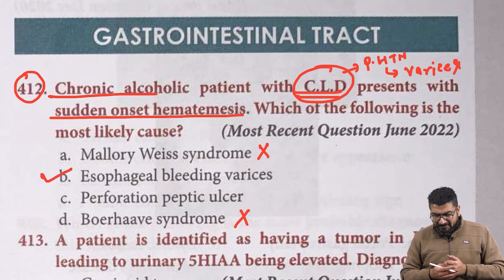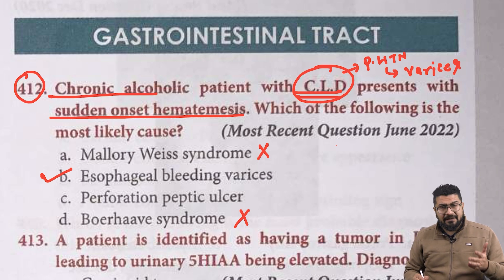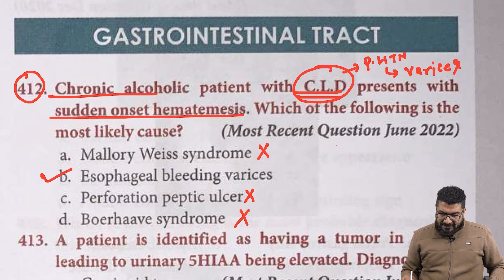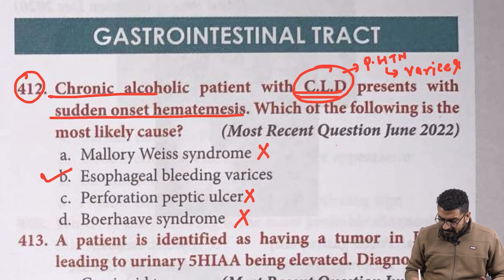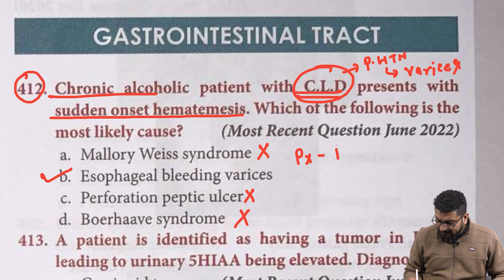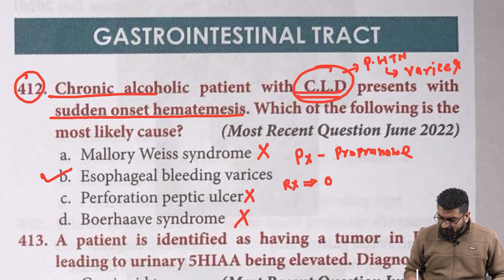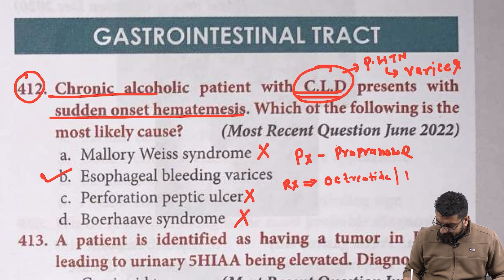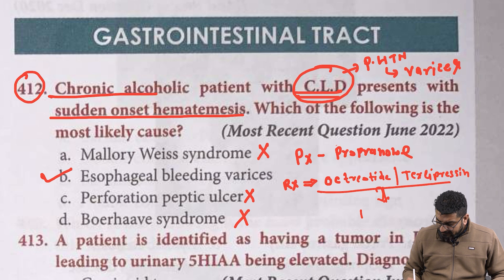The answer is esophageal bleeding varices. Peptic ulcer perforation rarely presents with hematemesis, and the patient may not have a CLD history. For prophylaxis of variceal bleed we give propranolol. To treat variceal bleed we give injection octreotide; if octreotide is not available, the alternative is terlipressin. If these fail, the last option is endoscopic band ligation — variceal band ligation.